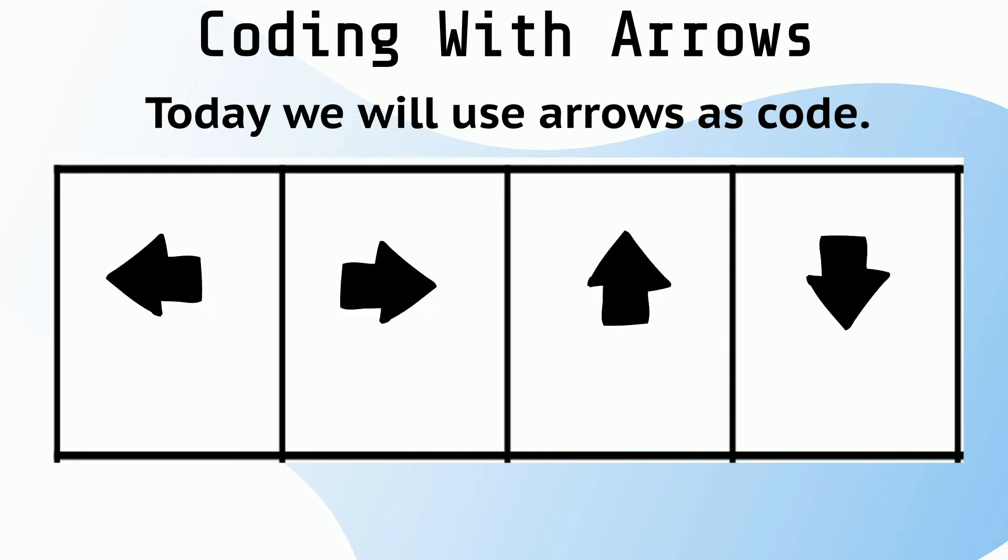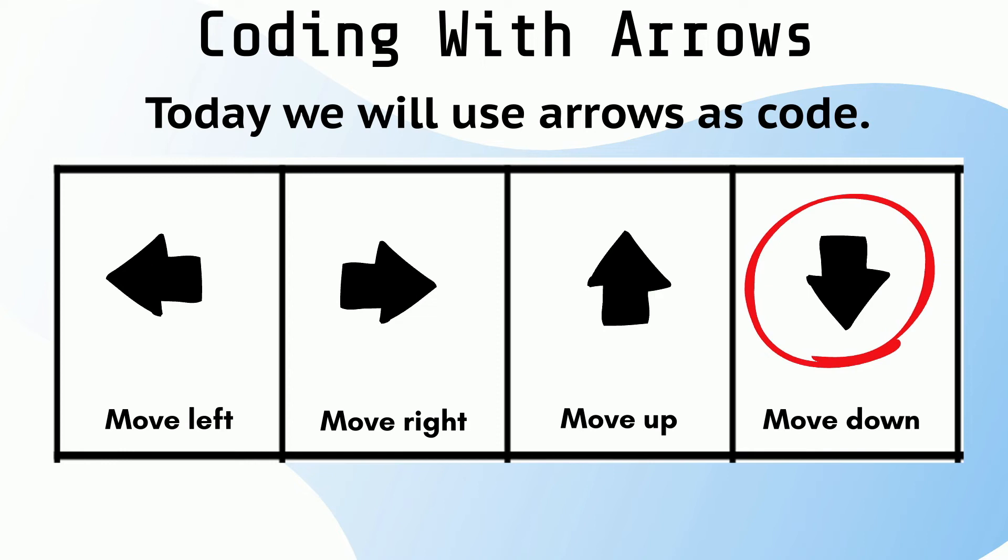Today we will use arrows as code. This arrow will give the computer instructions to move one box to the left. This arrow will give the computer instructions to move one box to the right. This arrow will give the computer instructions to move up one box. And this arrow will give the computer instructions to move down one box.